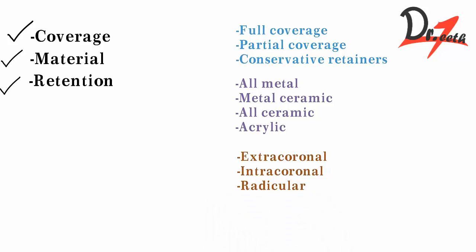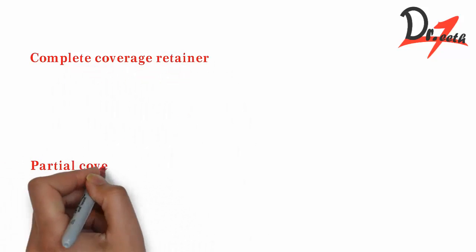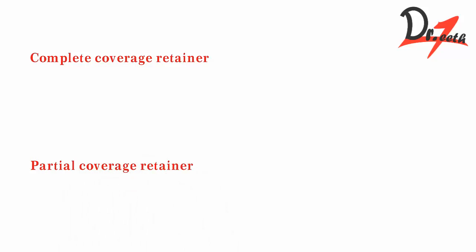What are the full coverage and partial coverage retainers? Full coverage means that the abutment covers all four surfaces. Partial coverage doesn't cover all the abutment surfaces. In full we get more retention compared to the partial.